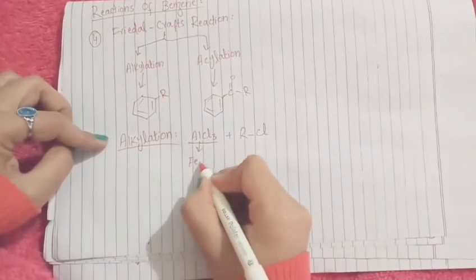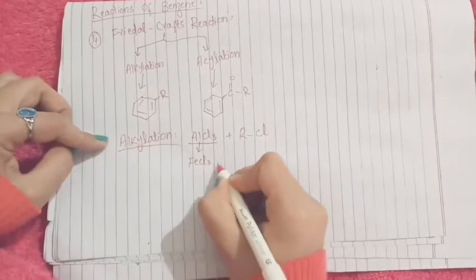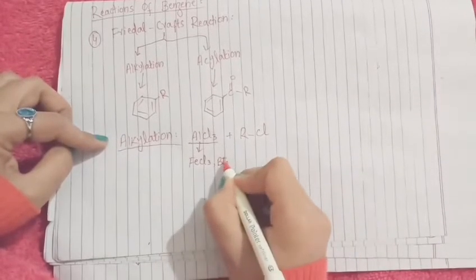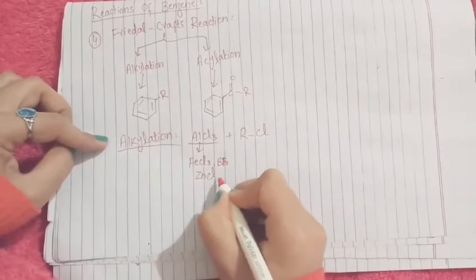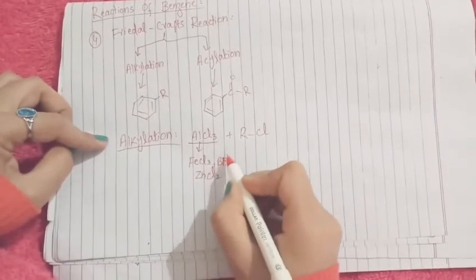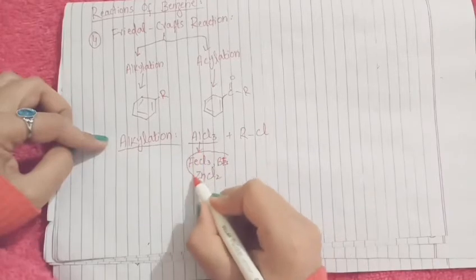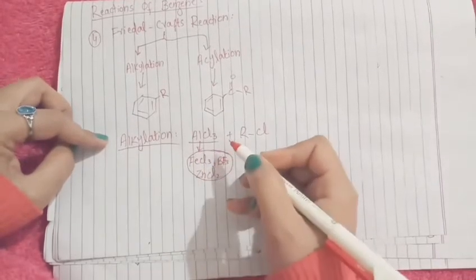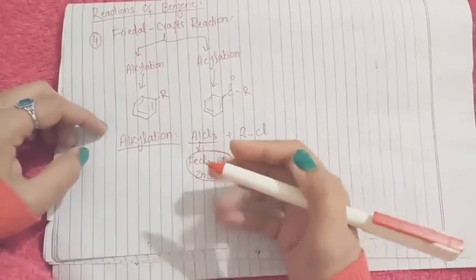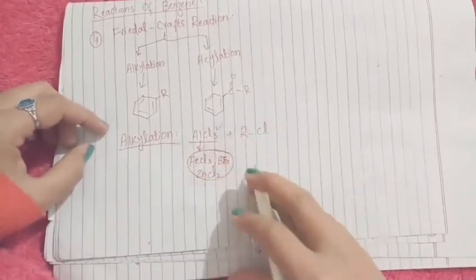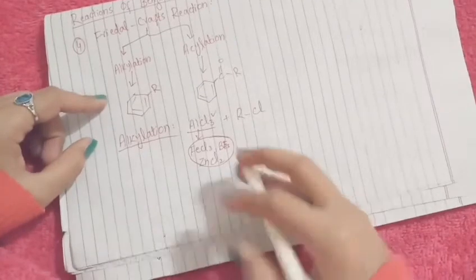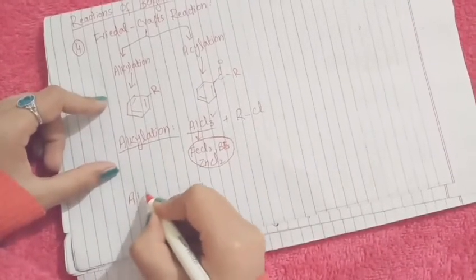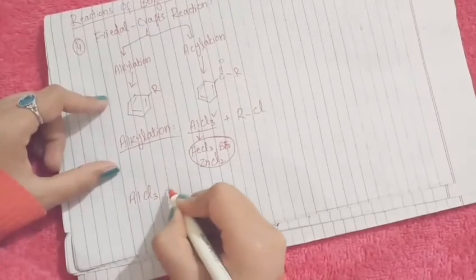We have other options like FeCl3, BF3, or ZnCl2, but by using these catalysts we get a very poor yield, so we mostly use aluminum chloride. Now, how does the mechanism proceed?